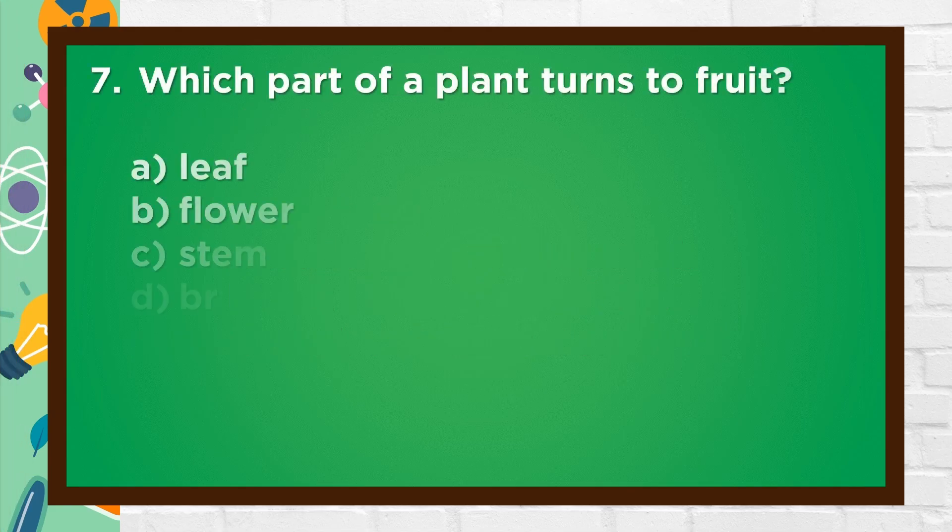Number 7. Which part of a plant turns to fruit? A. Leaf. B. Flower. C. Stem. D. Branch.